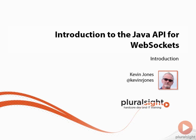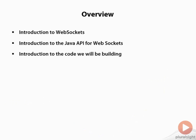Hi, this is Kevin Jones from Pluralsight and this is the Java API for WebSockets class. In this chapter we're going to do an introduction to WebSockets. We're going to take a very brief look at what the Java API for WebSockets is, and also take a look briefly at the code we'll be building during the rest of the class.